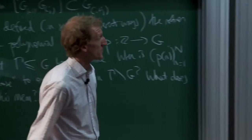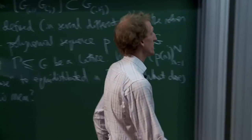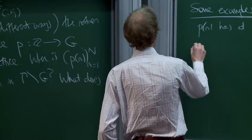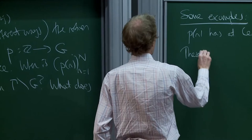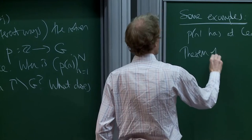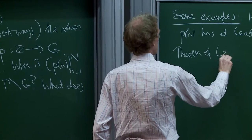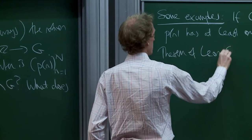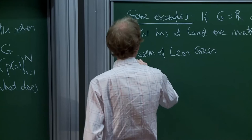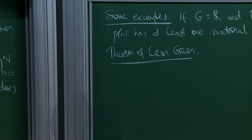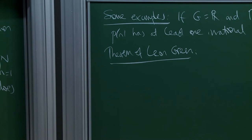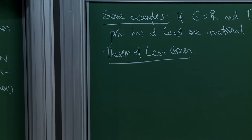There are also theorems in ergodic theory. A theorem of Leon Green — no relation of mine, I should point out — is about equidistribution of flows on nilpotent groups. So if G is a simply connected nilpotent Lie group, and P is a linear sequence, P(n) = a^n for some a...